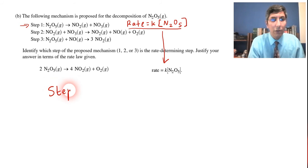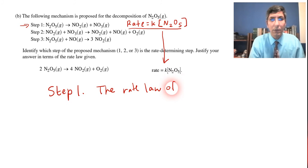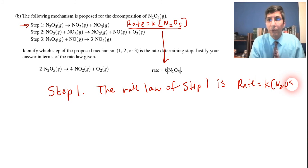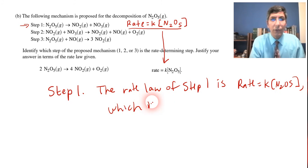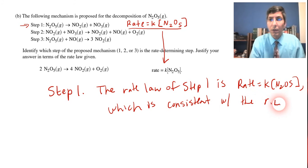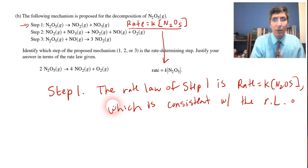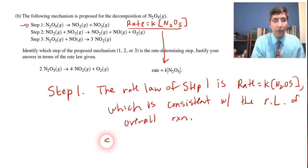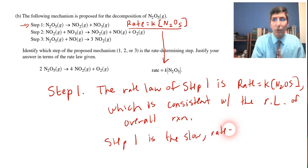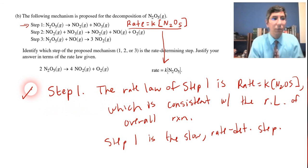I would say that the rate determining step is step one. The rationale is that the rate law of step one — rate equals k times the concentration of N₂O₅ — is consistent with the rate law of the overall reaction. As a result, step one is the slow, or rate-determining, step. If you have that with the correct explanation, I believe you'd receive one point for that.